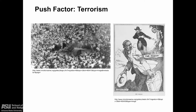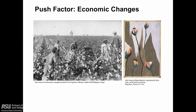Another push factor was terrorism. Without the right to vote and white elected officials offering no protection, African Americans had no legal recourse and lived in constant terror of mob violence. A rise in terrorism occurred with the resurgence of the Klan in the 1920s. From 1889 to 1932, 3,700 lynchings were reported, 85% of them in the South. Lynching directly impacted migration.